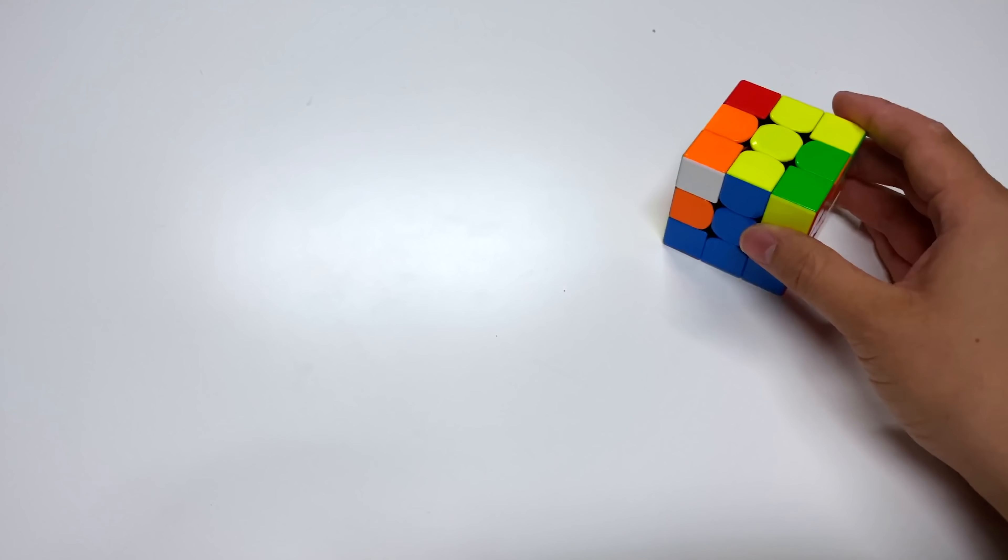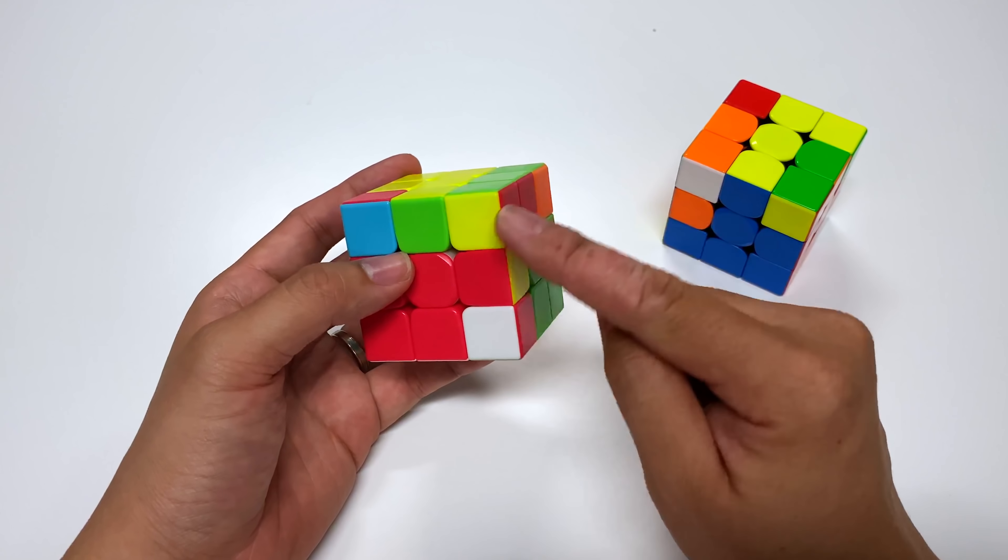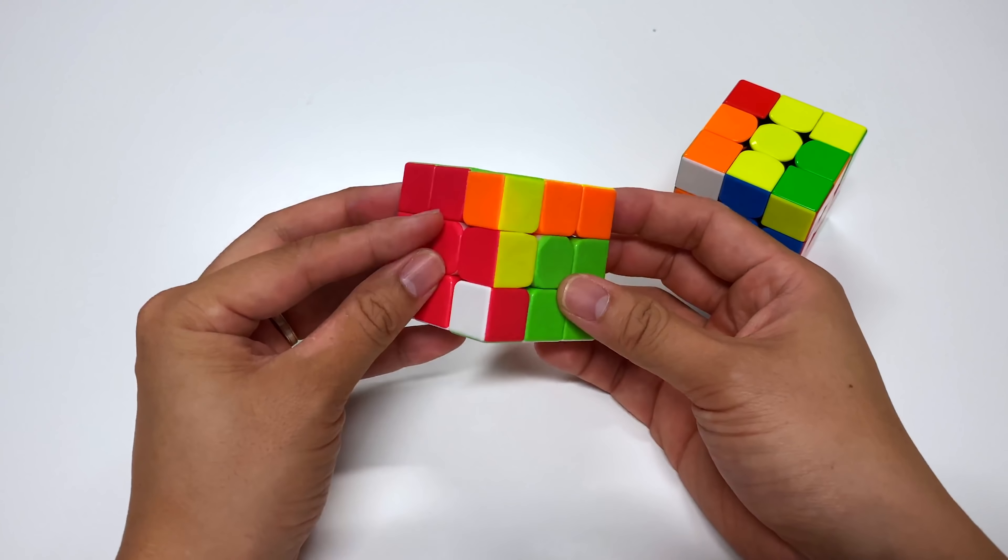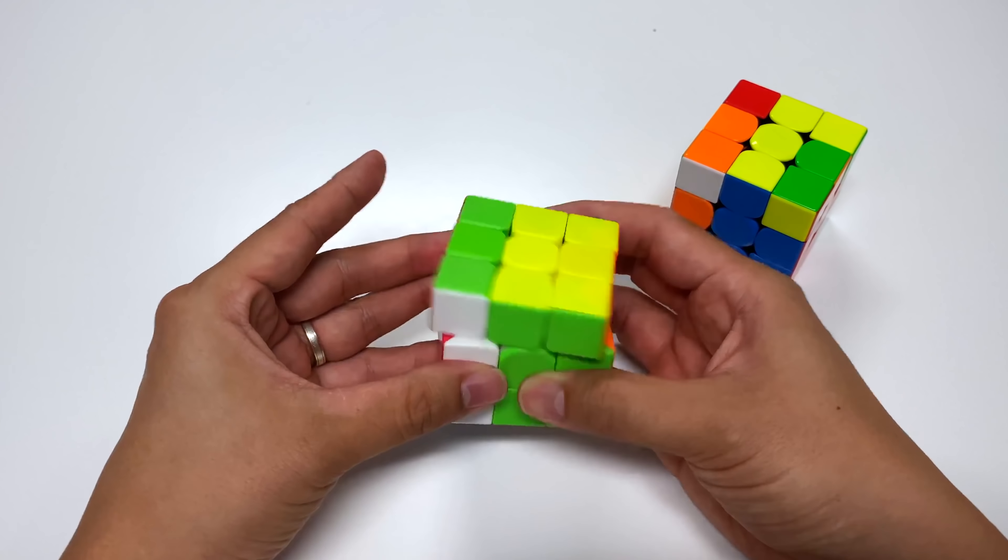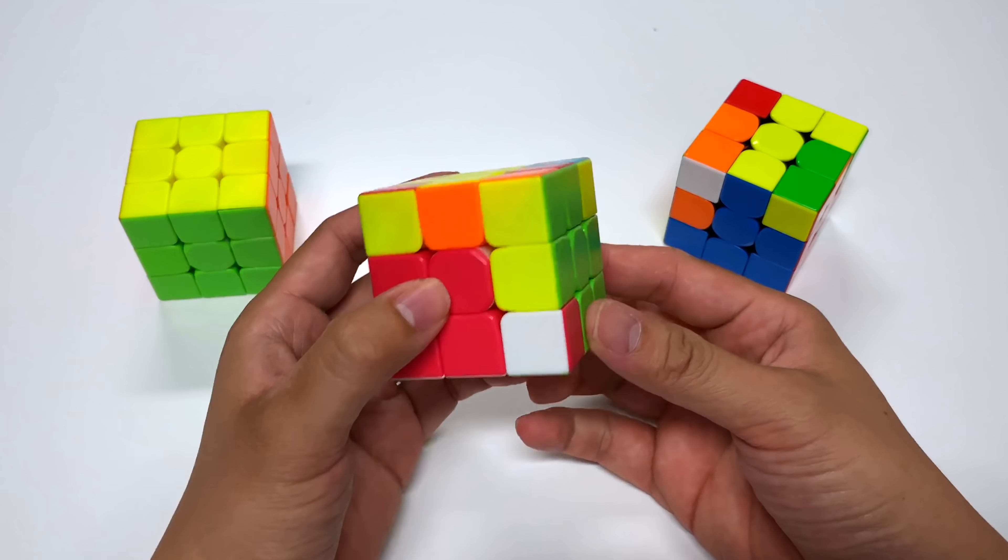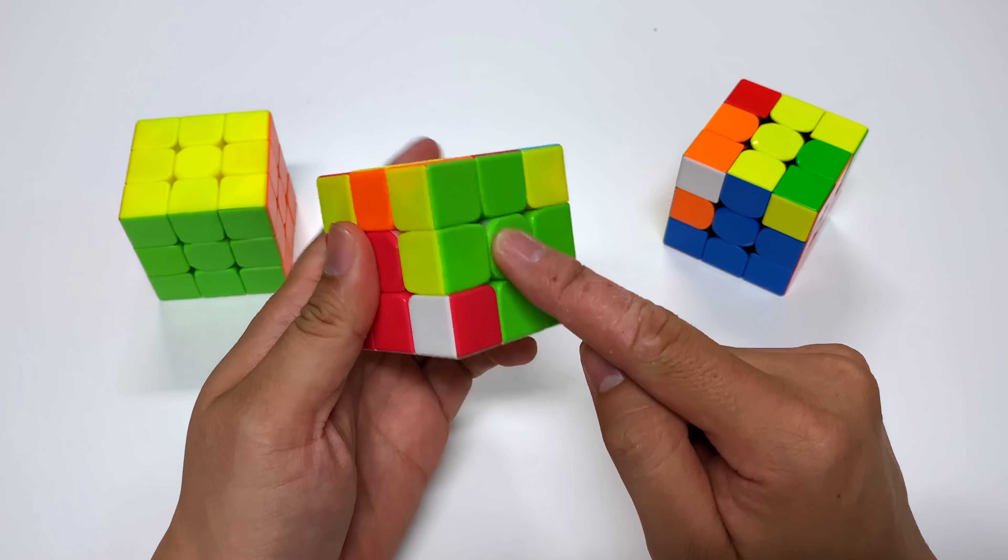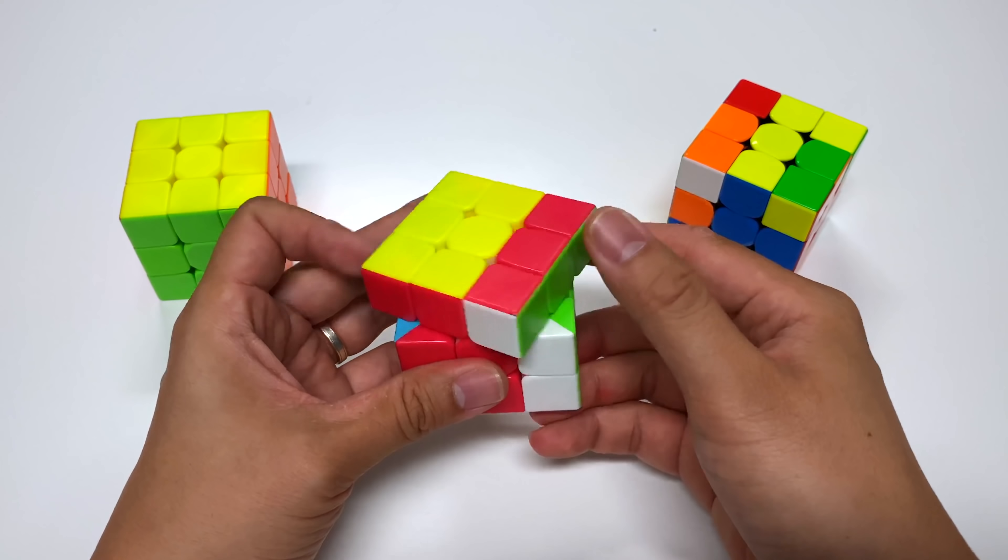This of course works on the other side as well. So had the white sticker been facing this way, I just match red up over here. Turn so it faces this way. And then do two sexy moves on the left. I should also say that if the white sticker was facing front, it's also really easy to solve. So if the color matches there, you can pair it up just like that. And then just insert it.